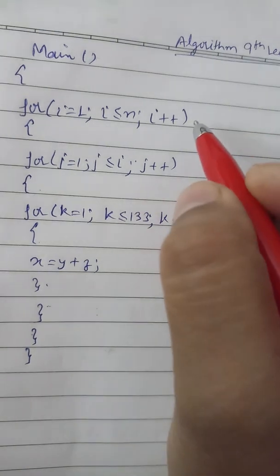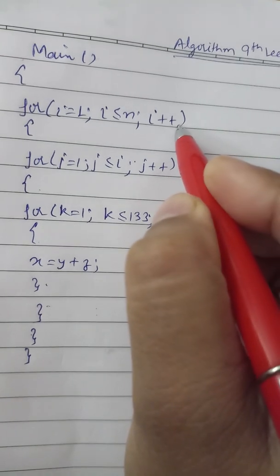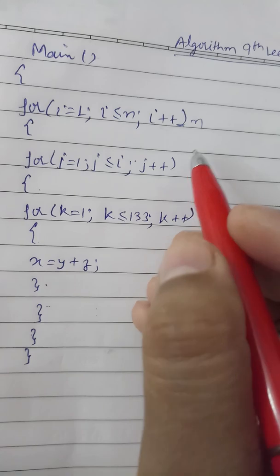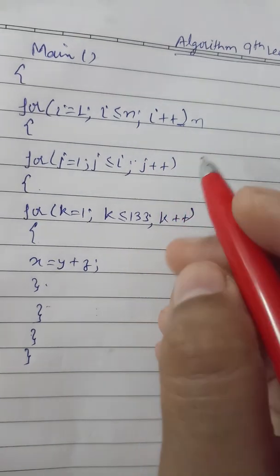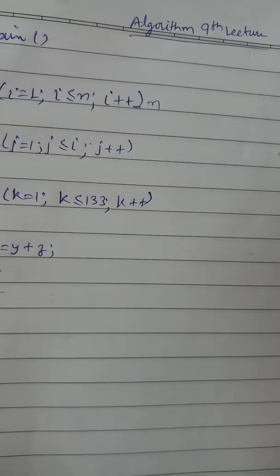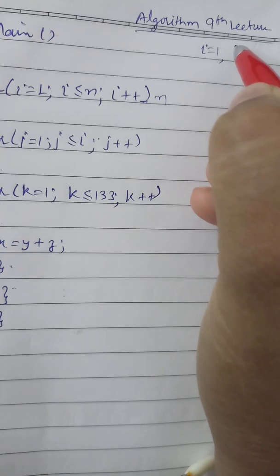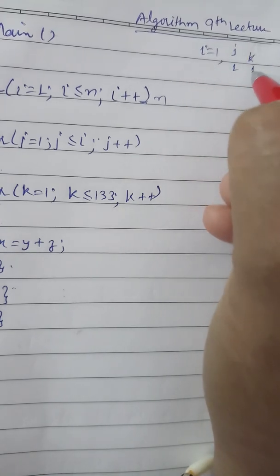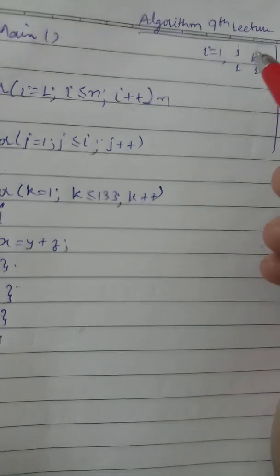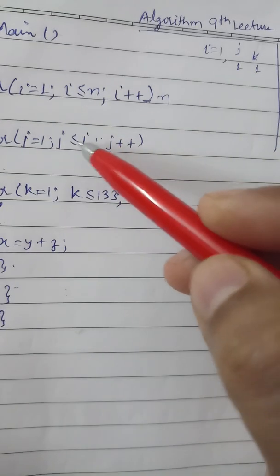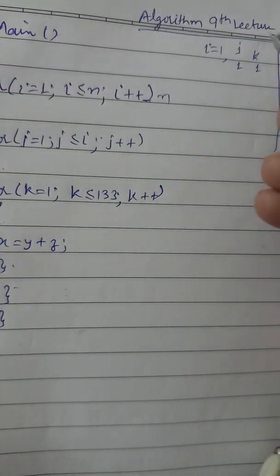Let's find the time complexity of this program. As I discussed in earlier lectures, you can also see in my playlist. The outer loop for i simply runs n times, because i starts at 1 and goes up to n. Initially, i is 1, j is also 1, and k is also 1. For j, since j less than or equals to i and i is 1, j runs 1 time, and k runs up to 133 times.